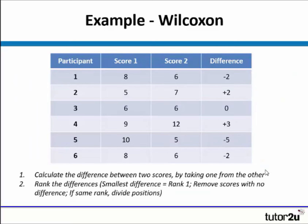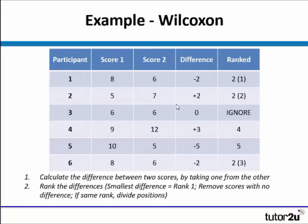For Wilcoxon, we need to calculate the difference between two scores by taking one from the other, and then we rank the differences. So we've taken six away from eight, seven away from five, etc. When ranking with Wilcoxon, we ignore anything that has a difference of zero. We also ignore the minus and plus signs for now. So here we have three scores of two, which would take positions one, two, and three, meaning they all take rank two — the middle value of those positions.